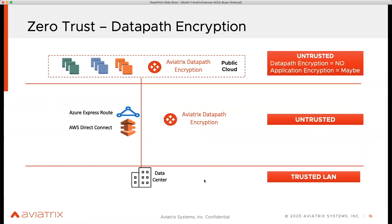The public cloud is something you don't fully trust, but you trust it in the sense that you're putting your applications there. Because they don't provide any data path encryption, this link in the middle is of course untrusted. This could be Equinix, CenturyLink, Zayo — it could be anything.